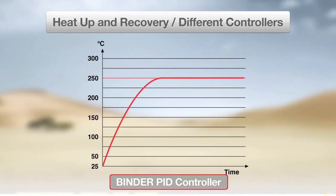With the Binder PID controller, slightly more time is required to reach the set temperature, but the accuracy is very high with excellent uniformity.